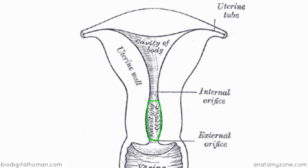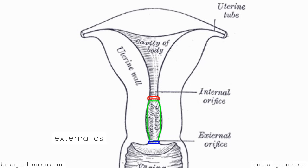Switching to a simple cross-section of the uterus, I want to show the cervical portion. The cervix is outlined in green — it's this narrow inferior portion. Where it opens up into the vagina, it's called the external os. And where it opens up into the uterine cavity above, it's called the internal os.